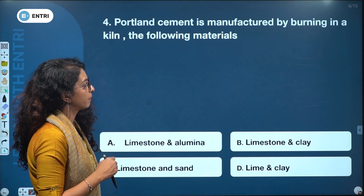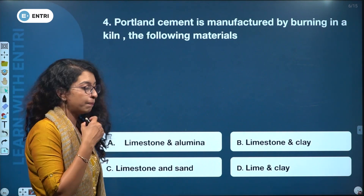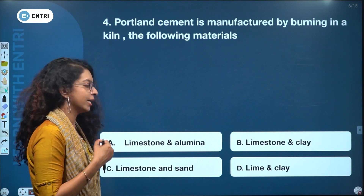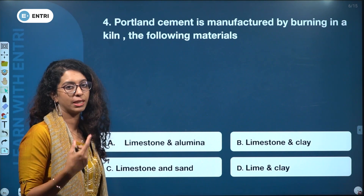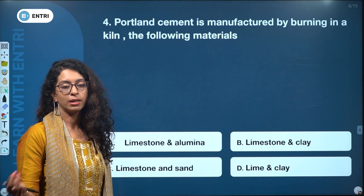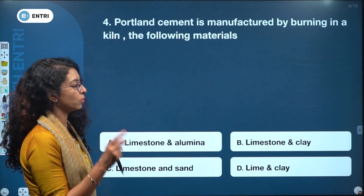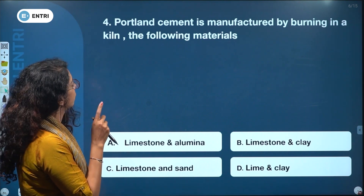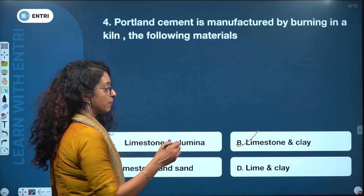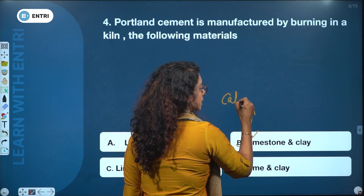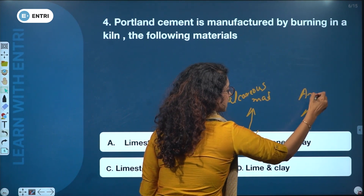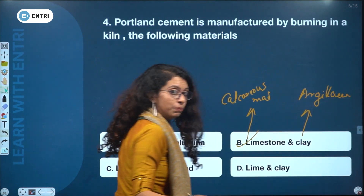Portland cement is manufactured by burning in a kiln the following materials. Options: limestone and alumina, limestone and clay, limestone and sand, lime and clay. The answer is B — limestone and clay. Limestone is a calcareous material and clay is an argillaceous material.